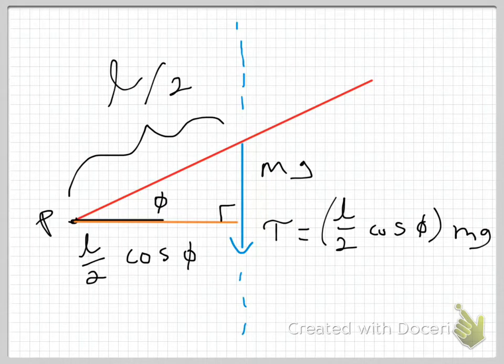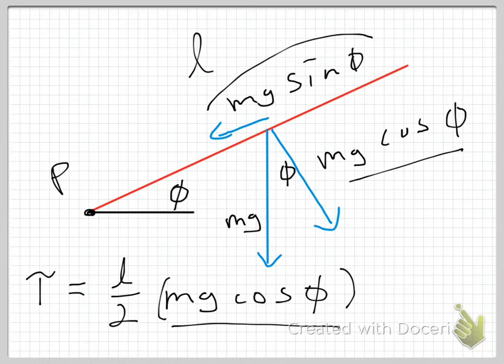All that to say, these methods are completely equivalent. So whichever one makes sense to you is the one you should use. My personal preference is the one in front of you, finding the perpendicular distance or the perpendicular moment arm. But if that doesn't make any sense to you, then by all means, resolve those vectors and pick off the perpendicular component of that vector. And that's the one that provides the torque. Whichever one makes the most sense to you. It doesn't matter to me which one you use. I hope this was helpful.